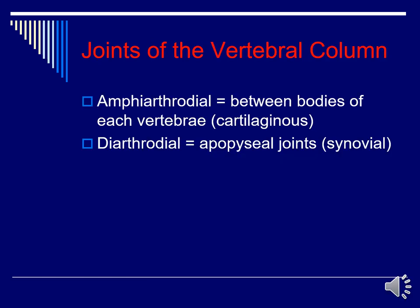The joints of the vertebral column are amphiarthrodial between the bodies of each vertebra — they are cartilaginous. They are also diarthrodial around the apophyseal joints with synovial fluid, also known as zygapophyseal joints or Z joints.